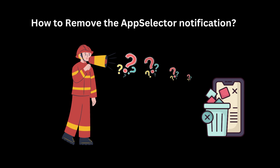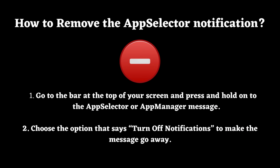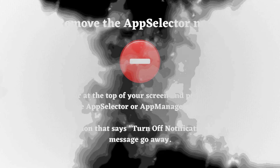How to remove the AppSelector notification? If you don't want to use the AppSelector or AppManager features and need to get rid of the message, just do these steps: Go to the bar at the top of your screen and press and hold on to the AppSelector or AppManager message. Then choose the option that says 'Turn off notifications' to make the message go away.